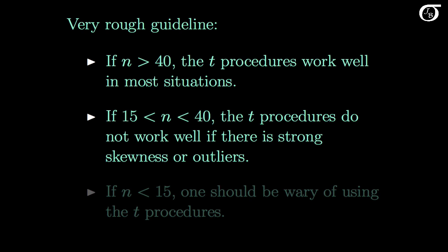If the sample size is between 15 and 40, the t-procedures may perform reasonably well, but they do not work well if there is strong skewness or outliers. Skewness and outliers can cause the t-procedures to perform very poorly.